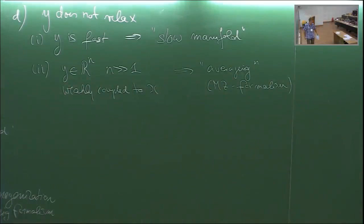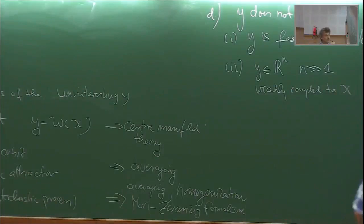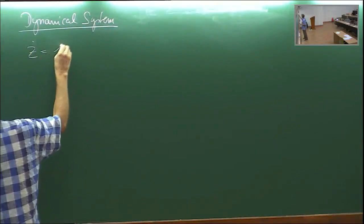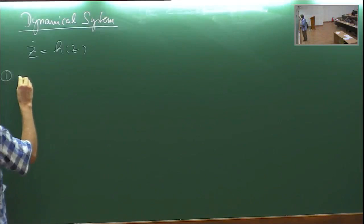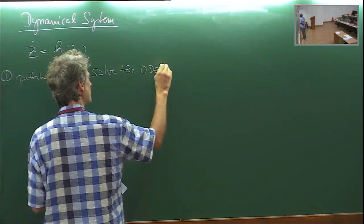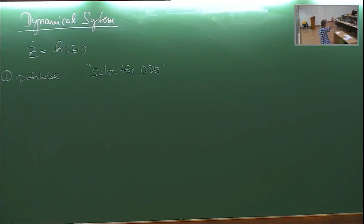Let's start elementary — deterministically — and get some concepts and different ways of looking at dynamics across. Suppose we have a deterministic dynamical system ż = h(z). I want to present three different views of how we can look at this system. The first one, which we're used to, is pathwise: we solve the ODE with some initial condition z₀. We assume h is nice enough so we have existence and uniqueness of the solution. Given an initial condition, there is a unique trajectory in phase space.